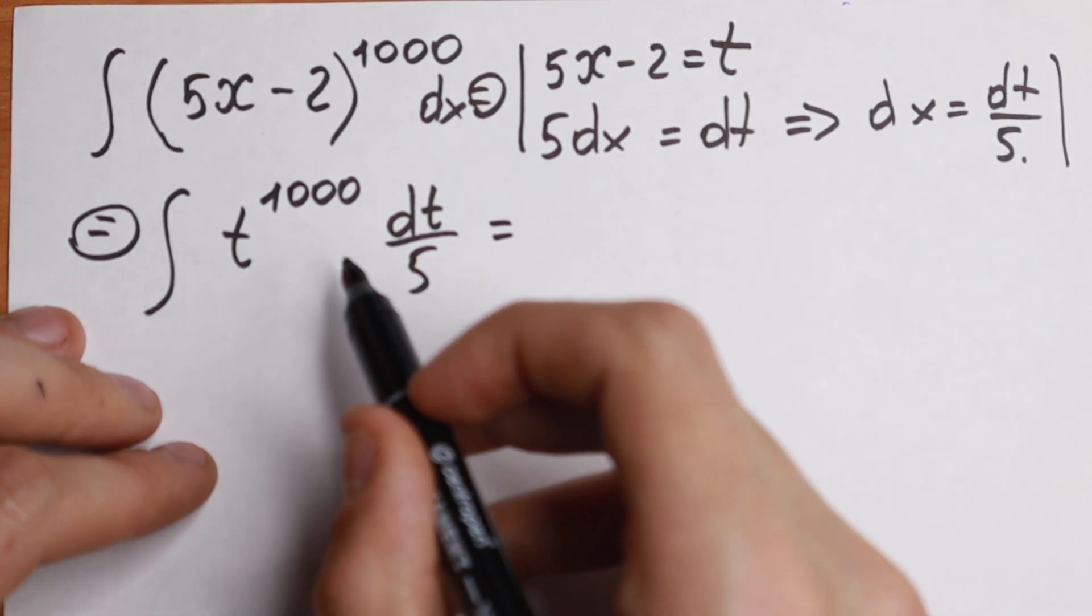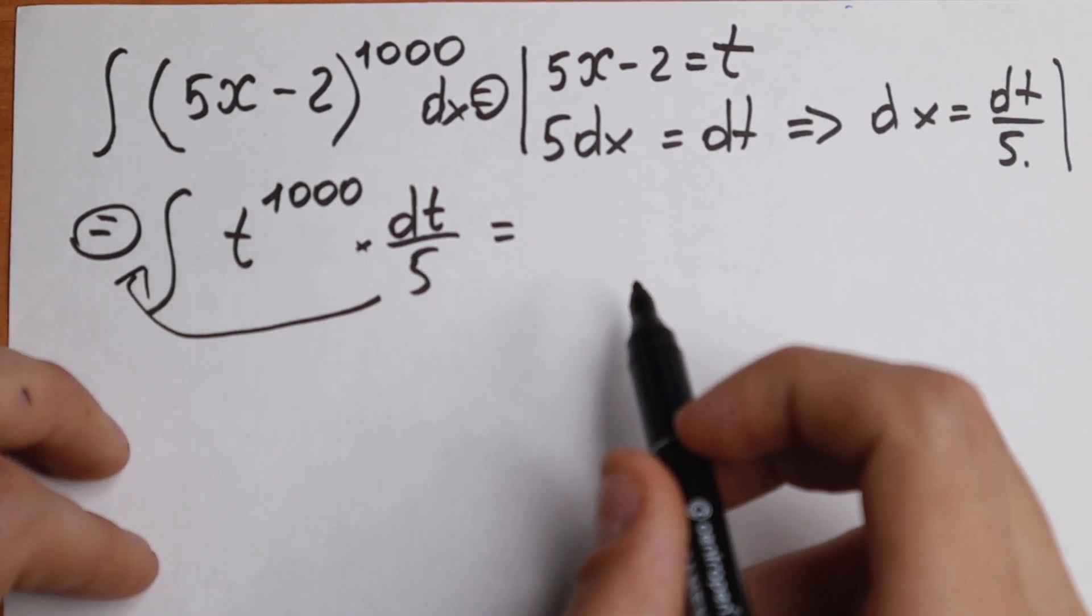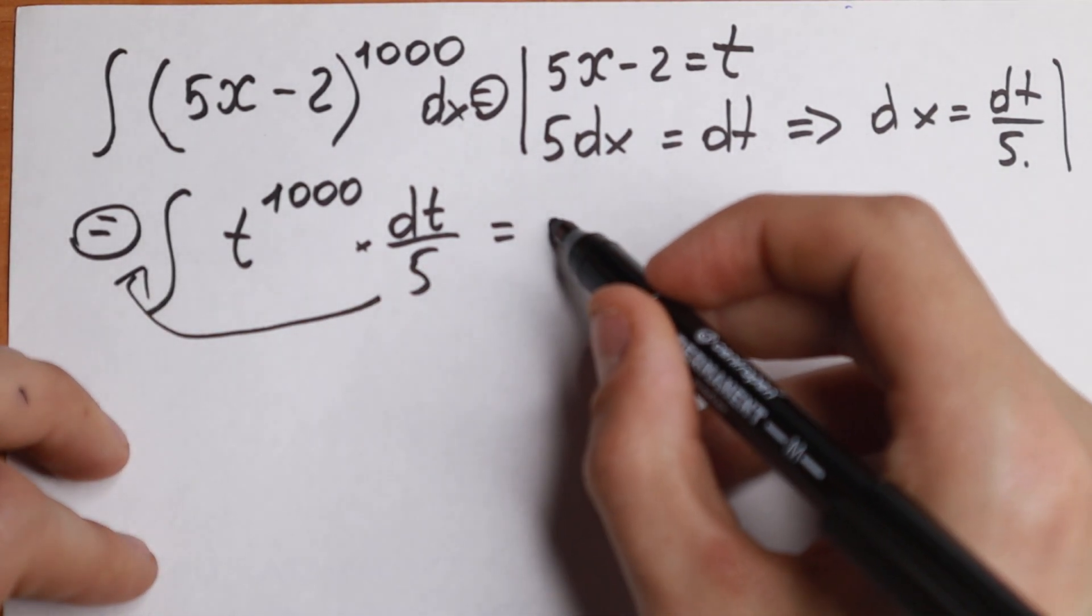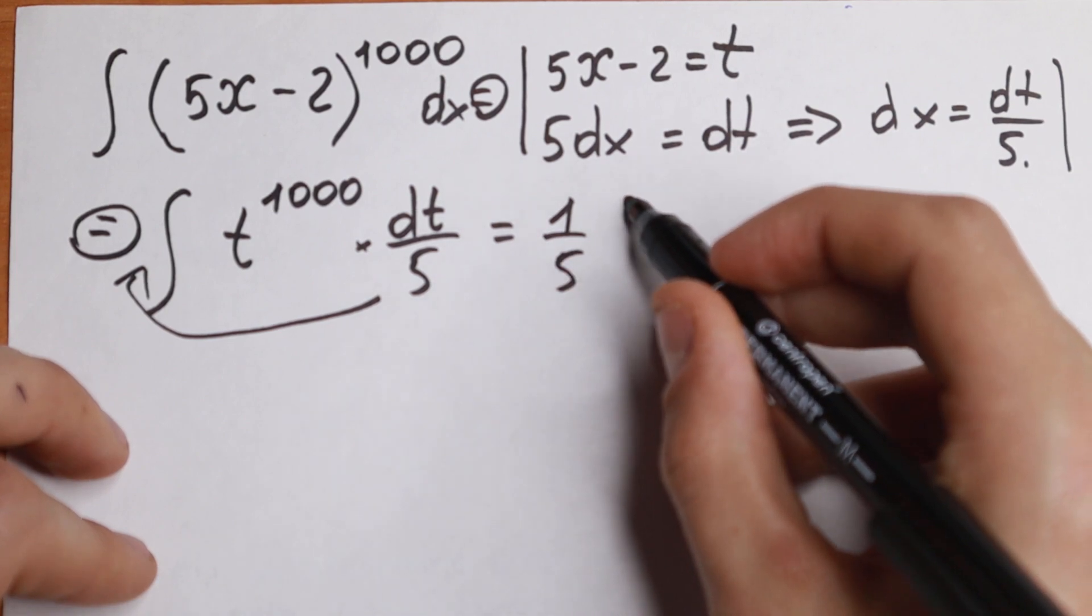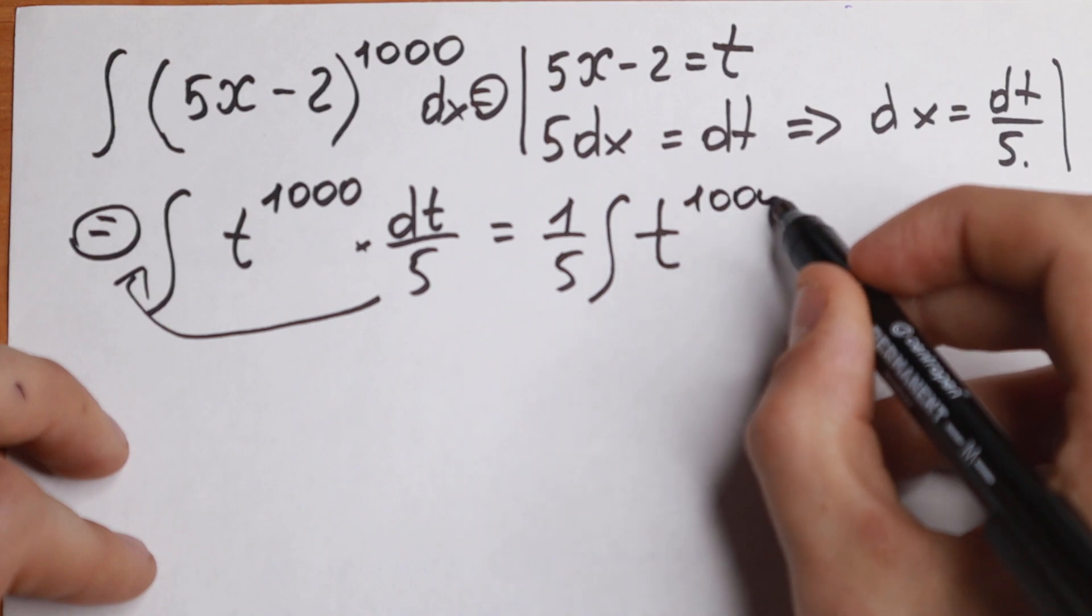As you can see, this 5 in our denominator, moreover, we have a product right here. So we can factor out this 5 behind the integral sign. So we will have 1 fifth integral t to the power 1000 dt.